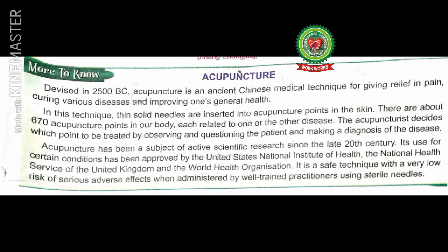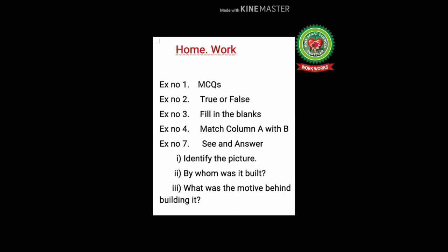Acupuncture is a system of medicine in which needles are inserted in the skin at particular points for giving relief in pain. There are about 670 acupuncture points in our body. Its use has been approved by the US National Institute of Health, the UK National Health Service, and the World Health Organization. Our lesson is now completed.